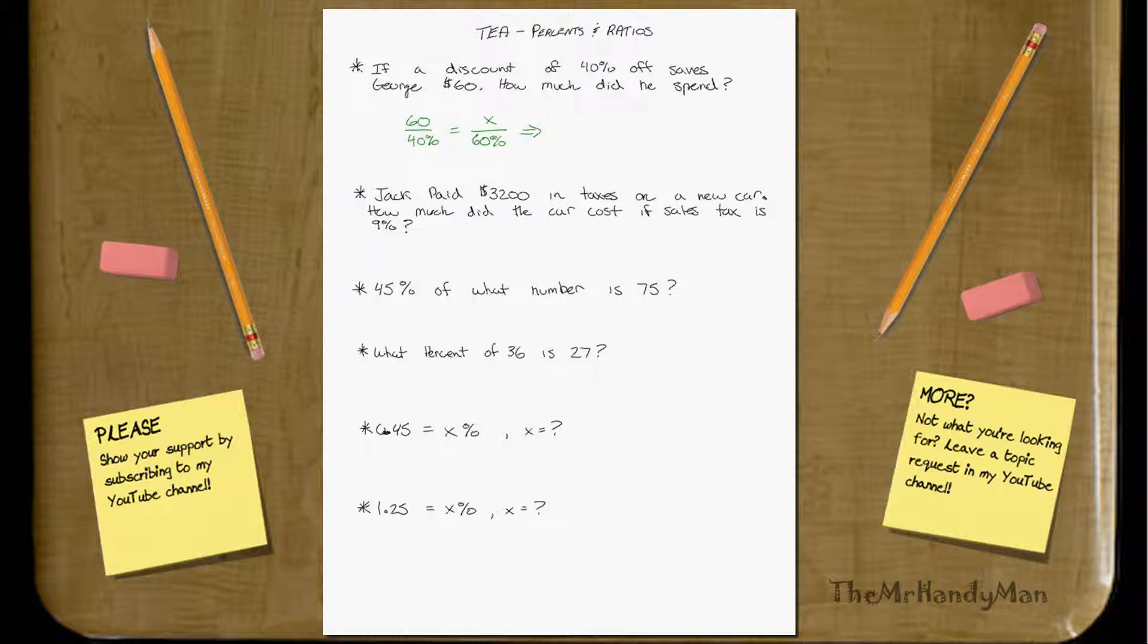Then all you do is cross-multiply. 60 times 0.6 equals 0.4x. Someone asked me earlier, why do I need to switch this out into a 0.6? And you don't. You could actually leave that as 60%. You just got to make sure that these units, whether it's a percentage or inches or feet or gallons, they just have to match up so they cancel each other out. When I divide this 0.4 over, its units would be knocked out by this 0.6.